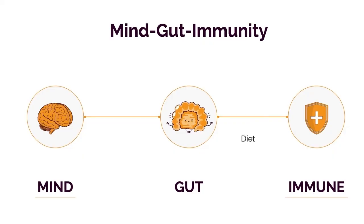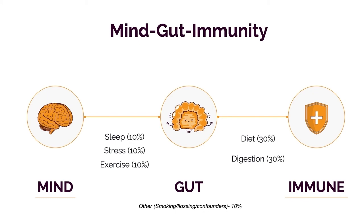If I had to assign percentages to each of these categories, I would say diet is roughly a third and digestion is roughly a third, so combined they represent more than half the impact. That's because most of your immune system lives in your gut and most of your genetic diversity is in your gut in the form of microbes. What goes into your gut, what lives in your gut, and what leaves your gut determines inflammation — simple as that.